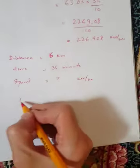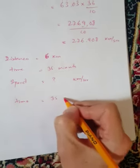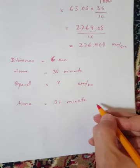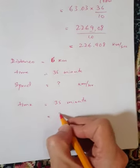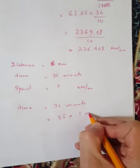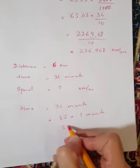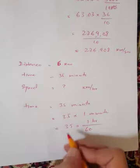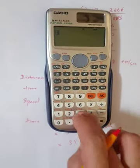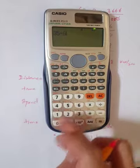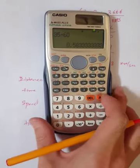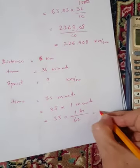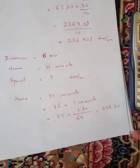Find his speed in kilometers per hour. We need to change minutes to hours. The time given is 35 minutes. One minute equals what in hours?